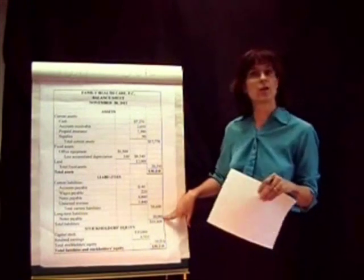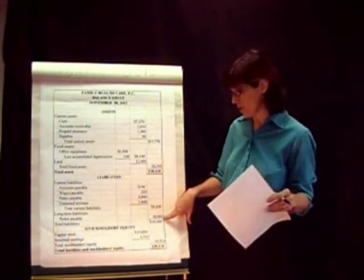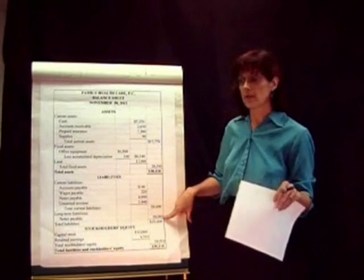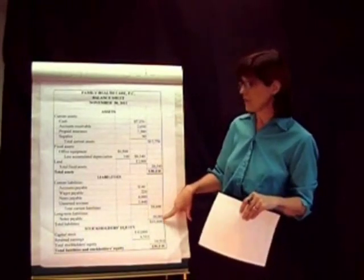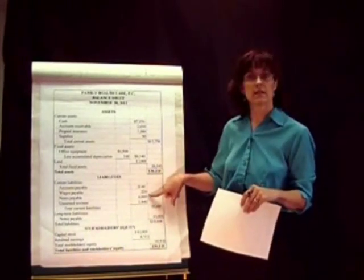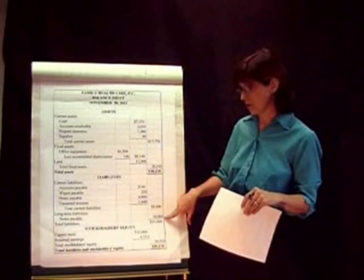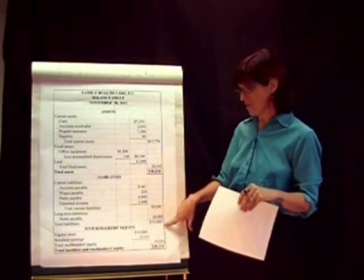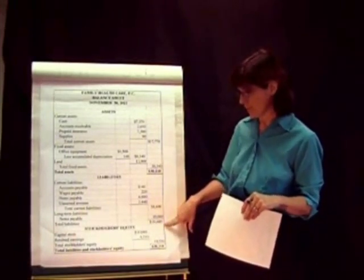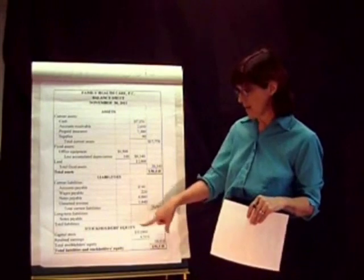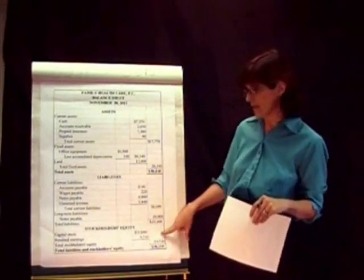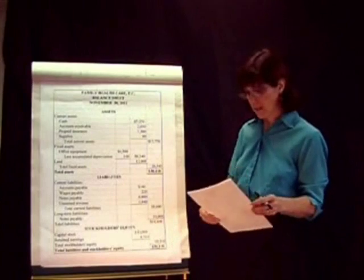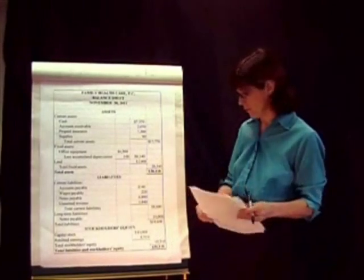When you're paying on a note, like a mortgage with monthly payments, you may have some that's current and some that's long-term. Together they form our total liabilities. Down in the stockholders' equity section, that really hasn't changed — we still have capital stock, retained earnings, and total stockholders' equity.